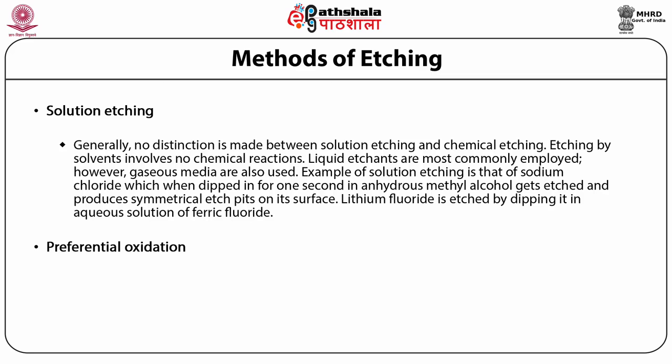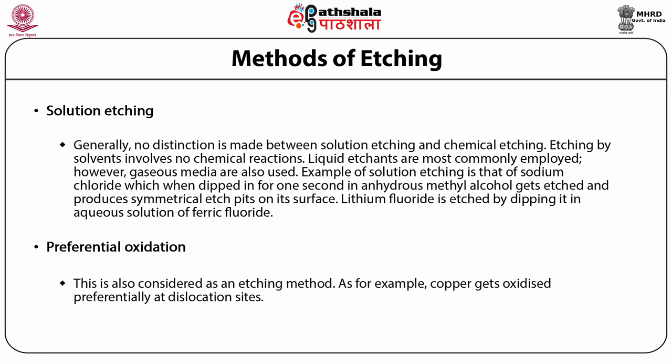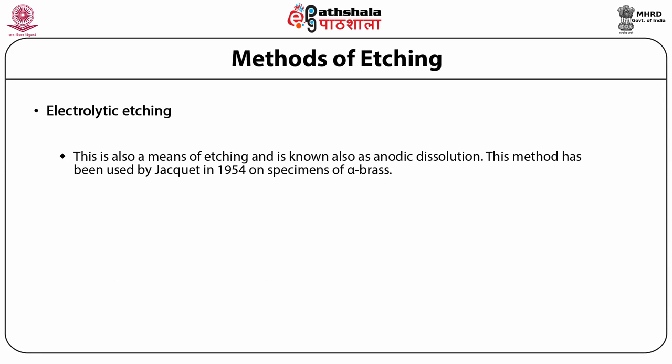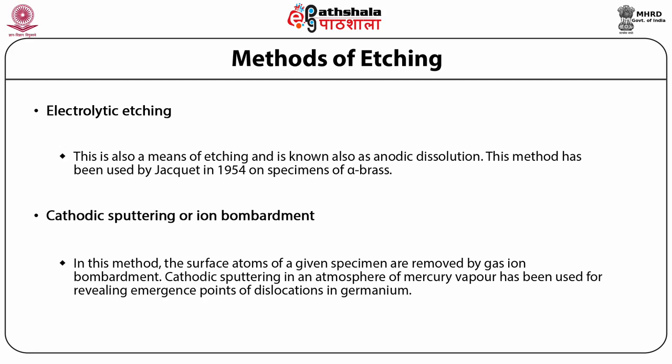Preferential oxidation is also considered as an etching method. For example, copper gets oxidized preferentially at dislocation sites. Electrolytic etching, also known as anodic dissolution, has been used by Jacket in 1954 on specimens of alpha brass. Next is cathodic sputtering or ion bombardment. In this method, the surface atoms of a given specimen are removed by gas-ion bombardment. Cathodic sputtering in an atmosphere of mercury vapour has been used for revealing emergence points of dislocations in Germany.